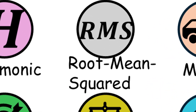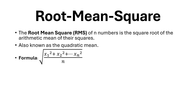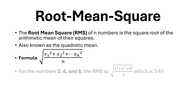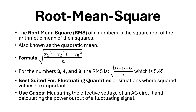Root mean square. The root mean square (RMS) of n numbers is the square root of the arithmetic mean of their squares, also known as the quadratic mean. The formula is as shown. For the numbers 3, 4, and 8, the RMS is calculated as shown. Best suited for fluctuating quantities or situations where squared values are important. Use cases: measuring the effective voltage of an AC circuit and calculating the power output of a fluctuating signal.